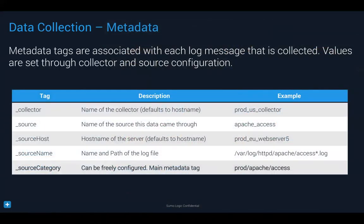Every single log message that comes into Sumo gets tagged with five metadata tags: the collector name (e.g., 'prod US collector'), the source (e.g., Apache access vs. Apache error), the source host, the path and name of the log file, and most importantly, source category — which can be freely configured and gives you a lot of flexibility. When setting up a collector, you specify the tagging; if you don't, Sumo uses defaults like the IP address or the collector name you assigned.